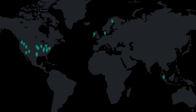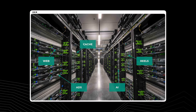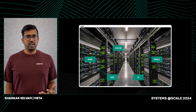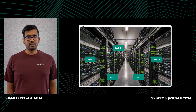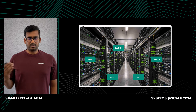At Meta, we have over 20 plus data centers across the globe. And if you zoom into one of the data center regions, you might find something like this, where a diverse set of services such as reels, ads, and AI workloads are all hosted together on the same region. We have millions of machines and thousands of diverse services, and in order to effectively manage this scale, we need a cluster management system.